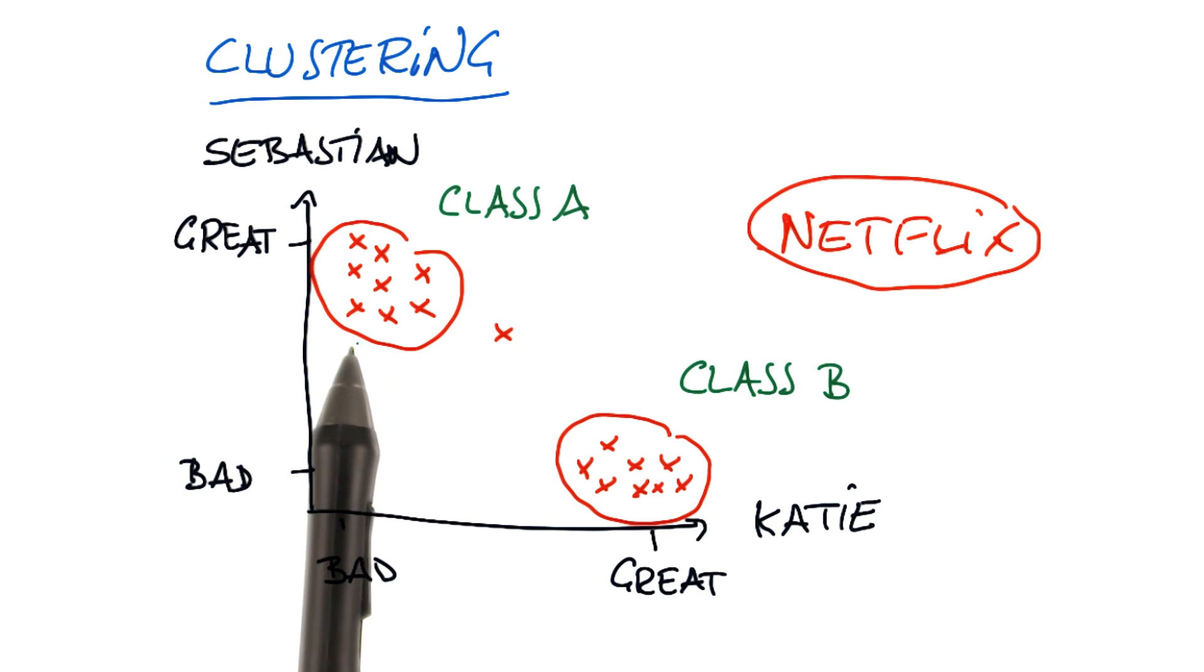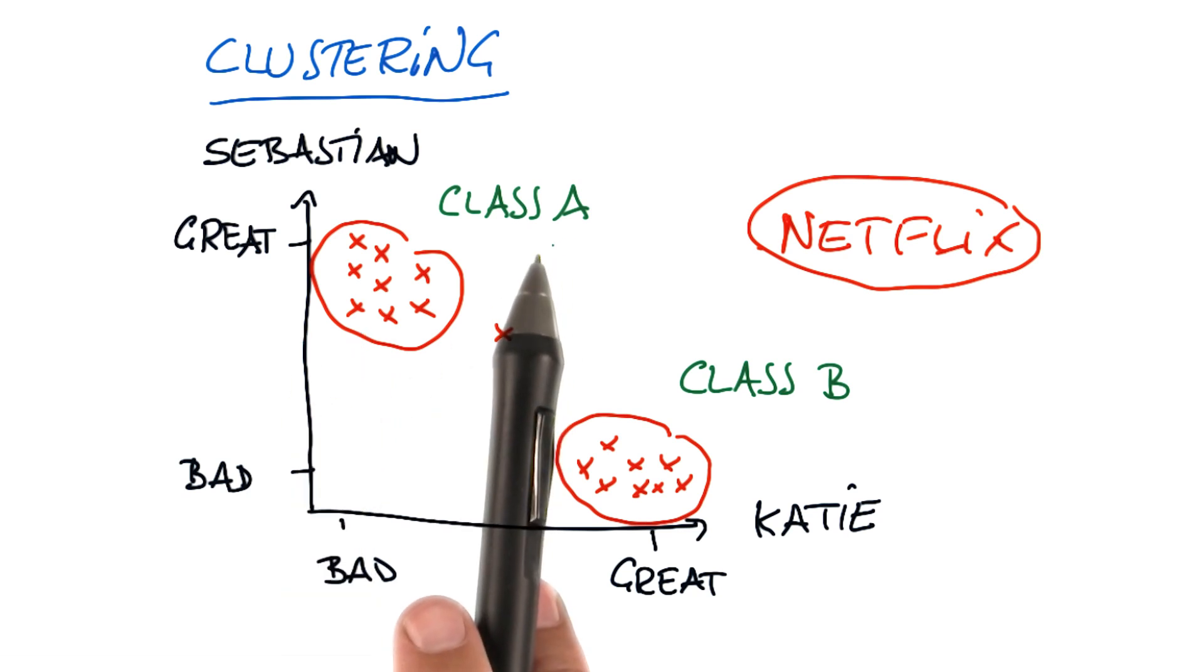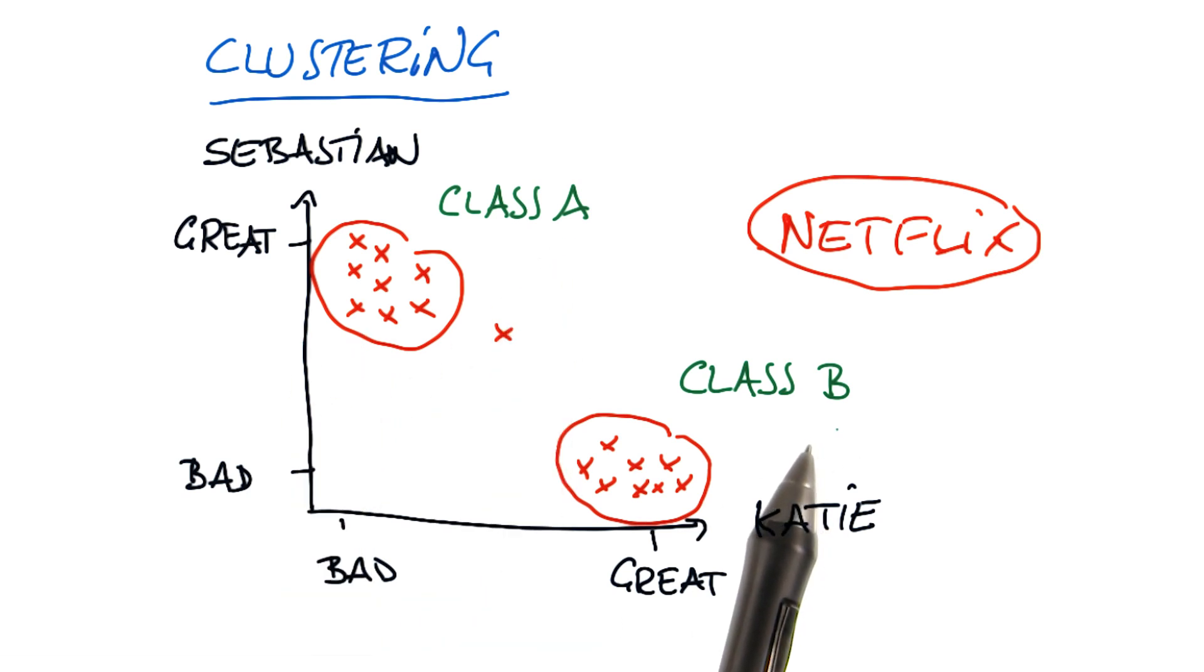Because here, there's no target labels given. No one wrote down for you that class A and B existed. But after looking at the data, you could, through clustering, deduce two different classes. And you could even look at the movie titles and understand what these classes are all about.